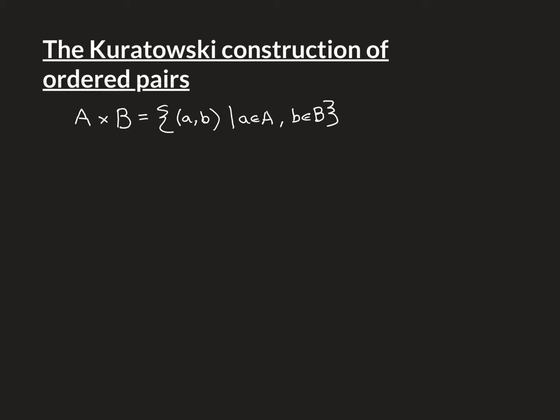Just recall from Naive Set Theory that the Cartesian product of a set A with a set B is equal to the set of all ordered pairs, where the first element little a is from the set big A and the second element in the ordered pair, little b, is taken from the set big B.